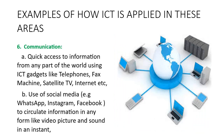In communication, ICT gives quick access to information from any part of the world using gadgets like the telephone, fax machine, satellite TV, and the internet. Also, social media platforms — WhatsApp, Instagram, Facebook — are used to circulate information in any form such as video, pictures, and sound instantly. The moment a video is up on the internet, people begin to send it everywhere and it circulates in an instant. With ICT, it is easy for information to travel around.